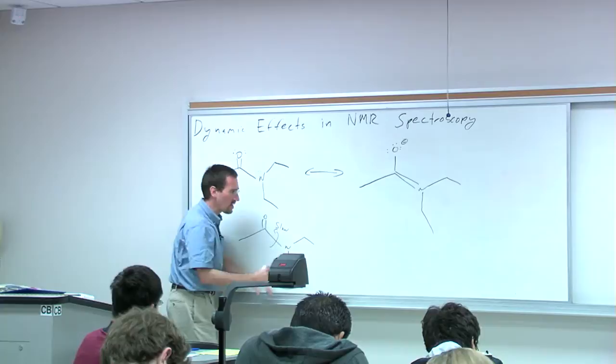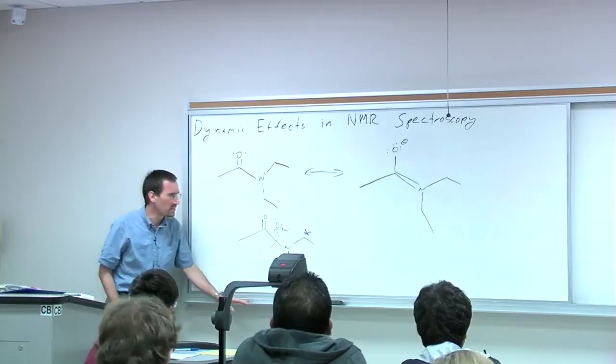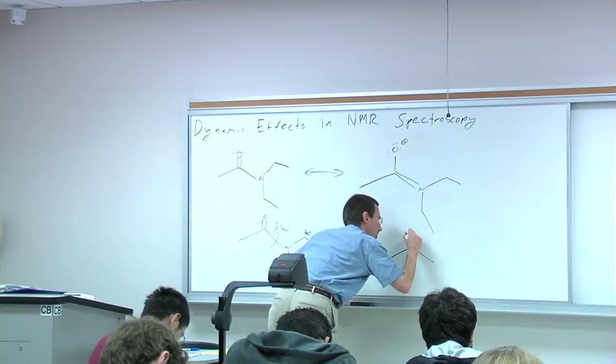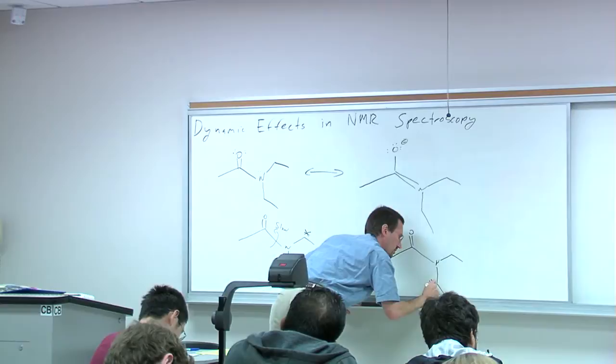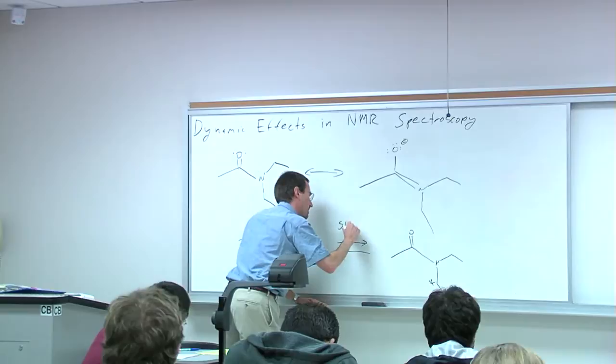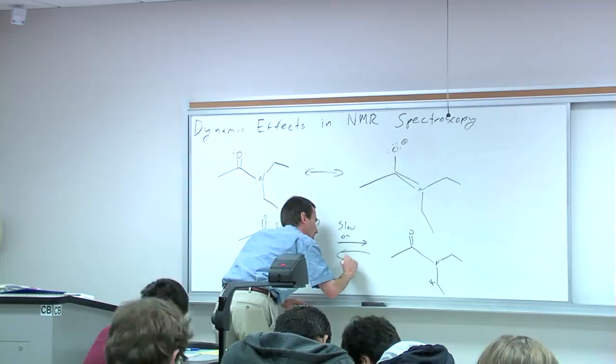I'll say slow, which means if I put a star next to this ethyl group here to remind us it's special. You do have a dynamic equilibrium where you swap positions — in this case the star ethyl group is cis to the carbonyl, in this case it's trans to the carbonyl — but this equilibrium is slow on what we'll call the NMR time scale.